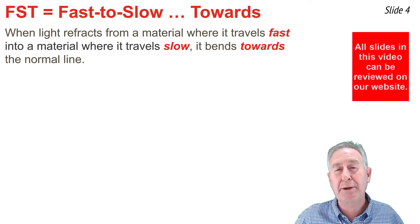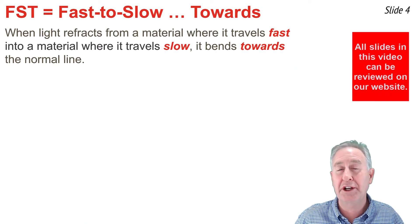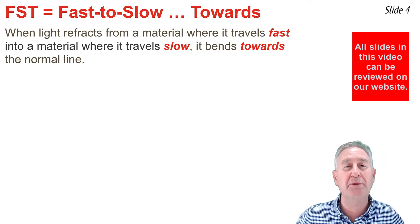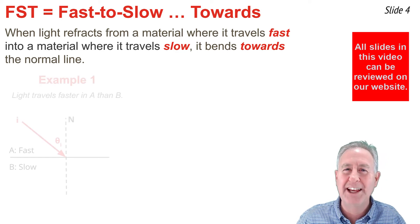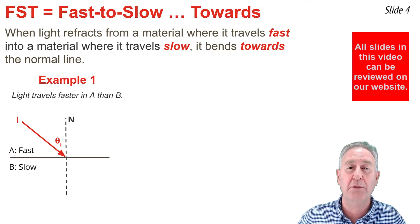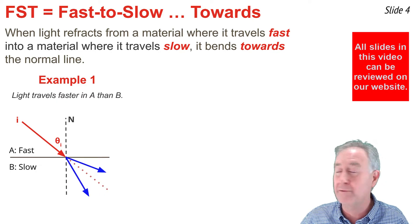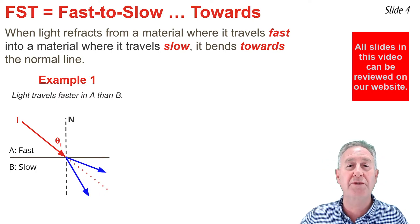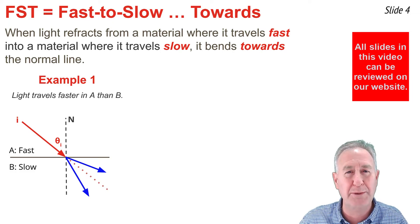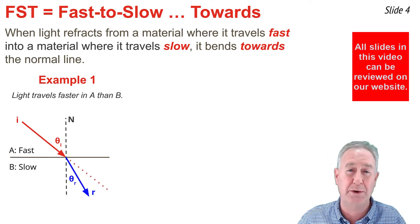When an incident ray is in a material where it's traveling faster and passing into a material where it's traveling slower, it will bend towards the normal line. In this ray diagram, we see an incident ray in the faster material A approaching a boundary with the slower material B. Instead of following the straight line path, because it's moving from fast to slow, it bends towards the normal line. So the refracted ray will be closer to the normal line than the incident ray is.